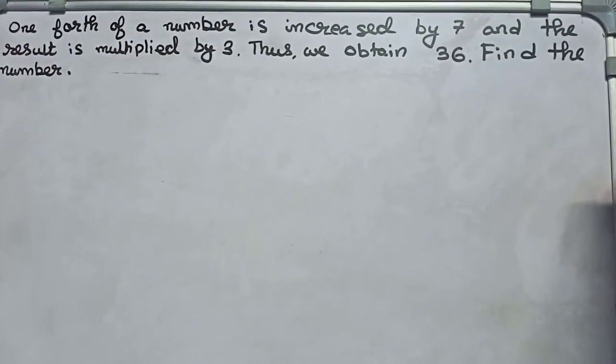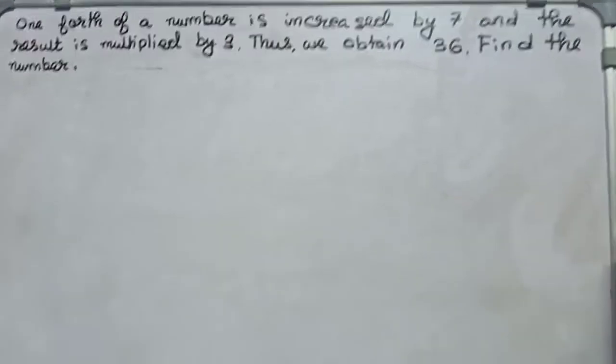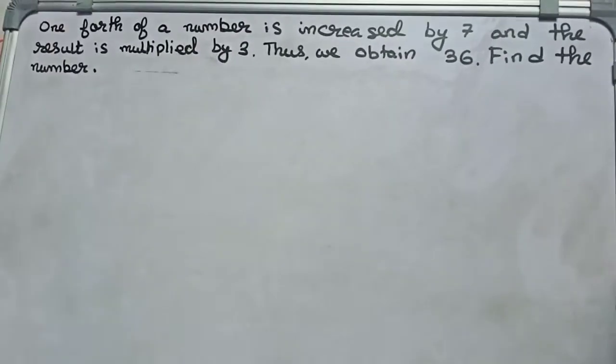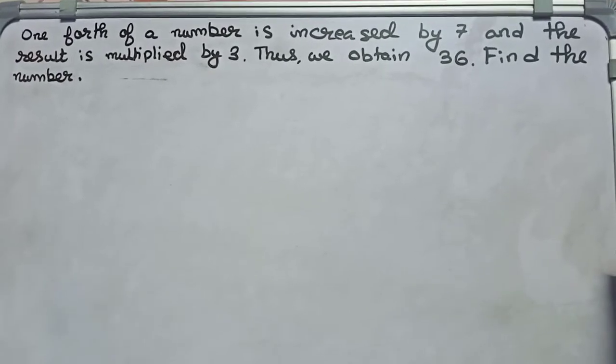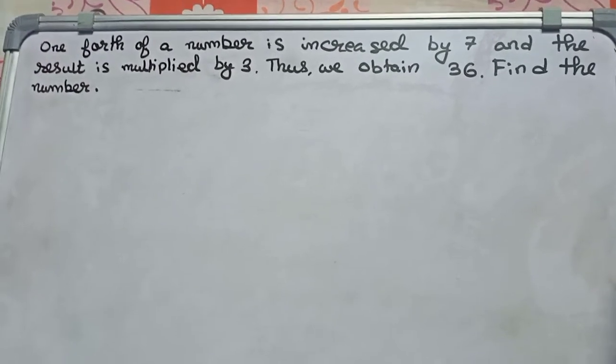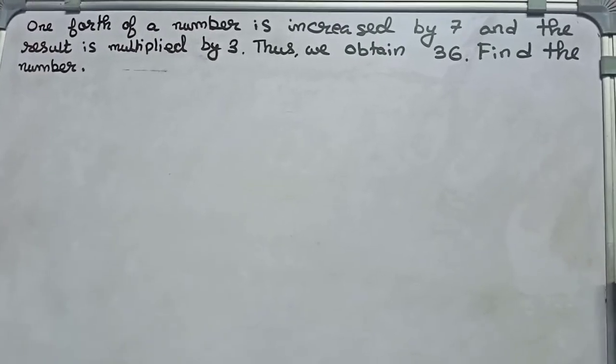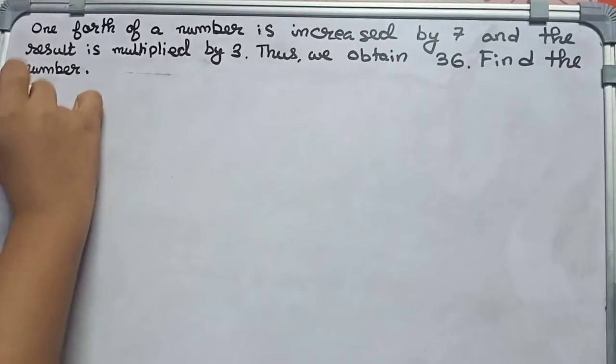Hello guys, welcome to this video. In this video, our question is: one-fourth of a number is increased by 7, and the result is multiplied by 3. Thus we obtain 36. Find the number.